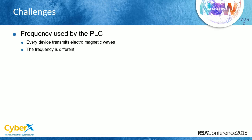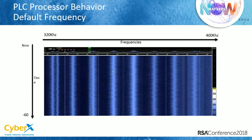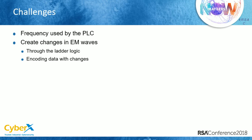A few challenges during the research. First, we had to find the frequency of the PLC we're working on. This image shows the frequency range — around 300 kHz to 400 kHz on the X axis, with time on the Y axis. We were browsing through the frequencies, connecting and disconnecting our PLC from power, and trying to understand what frequency it emits. Once we found it, we did some cool stuff.